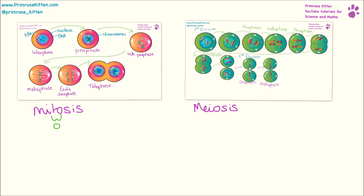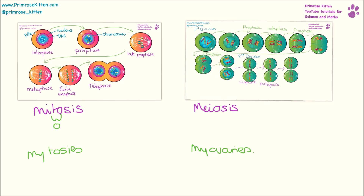Mitosis happens in my toses and meiosis happens in my ovaries. So there are a couple of different ways that you can remember the differences between them.